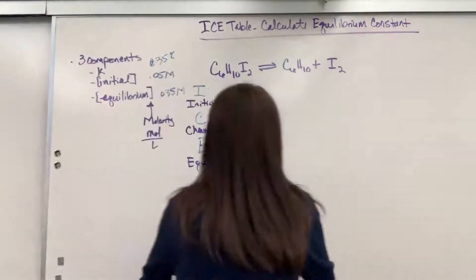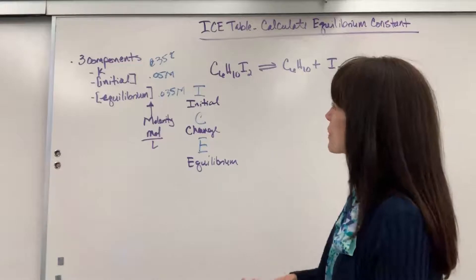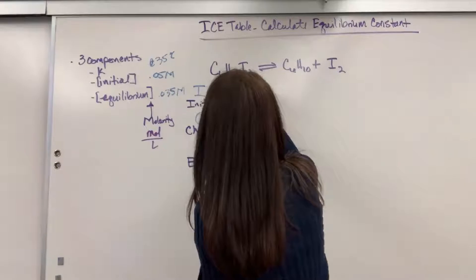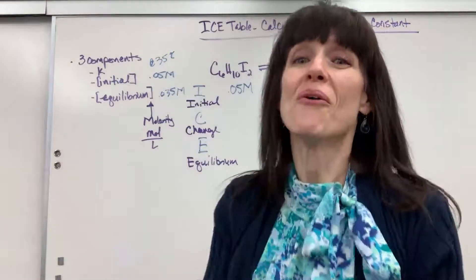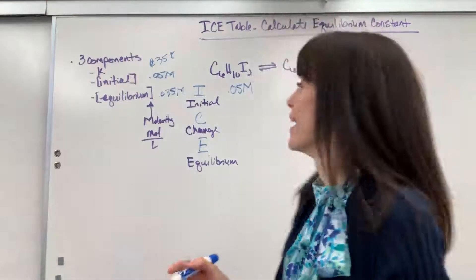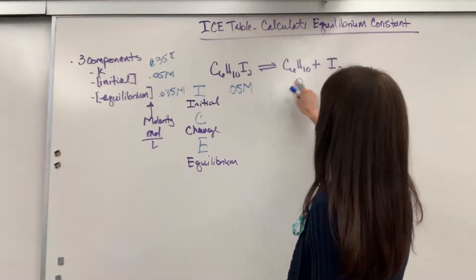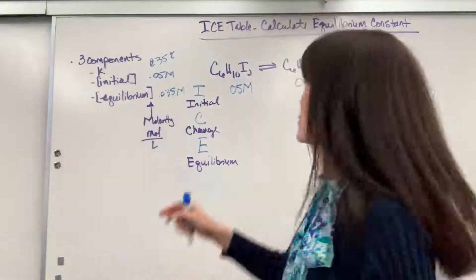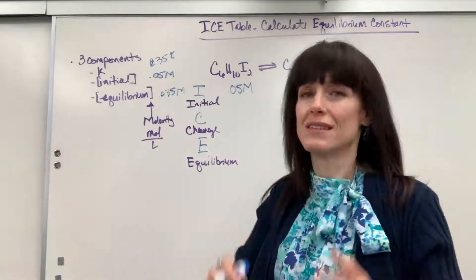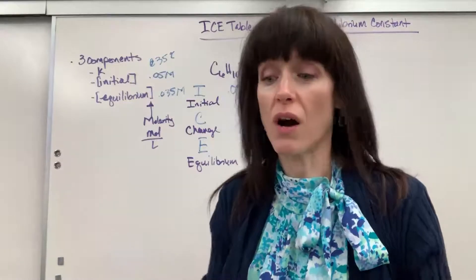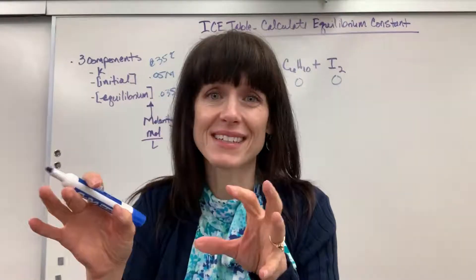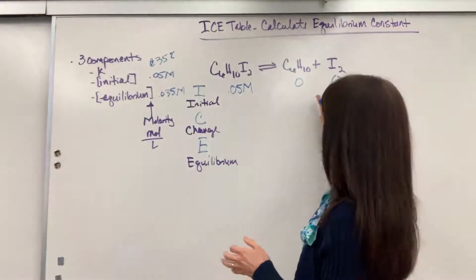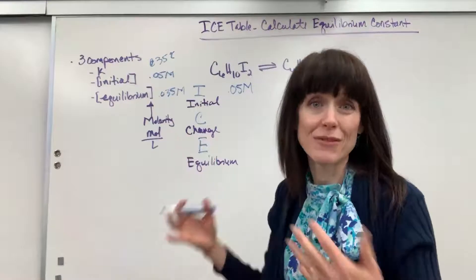Now we're going to start filling out the ice table. Our initial concentration was this 0.05 molar. That's what you have is only reactants. That's all you've got. So we have zero of the products. When you start with a product, but 90% of what you're going to do, all you have is the reactant. So here's your little reactant and nothing's happened. This is before the reaction happens, what you start with, which means zero products.